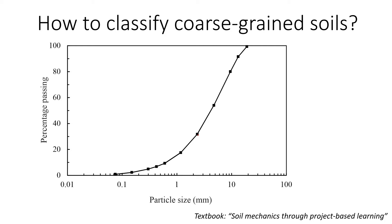This video will explain how to classify coarse grain soils. Coarse grain soils are typically sand or gravel, and they have no plasticity, so we call them non-plastic coarse grain soils.